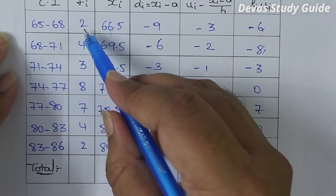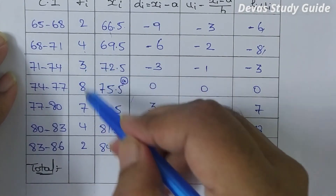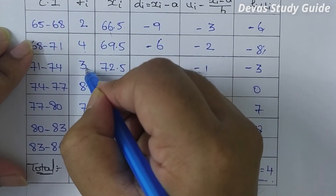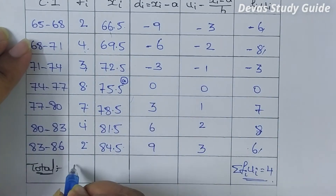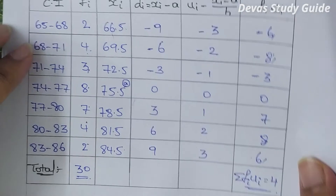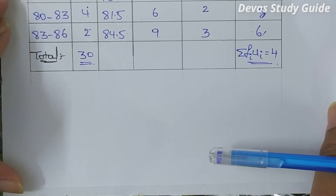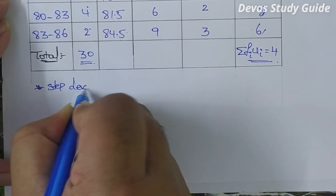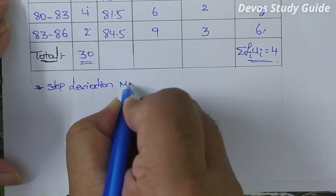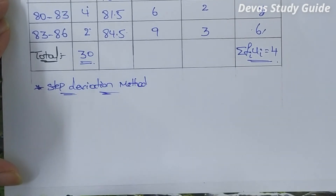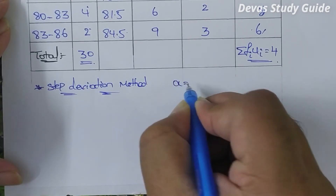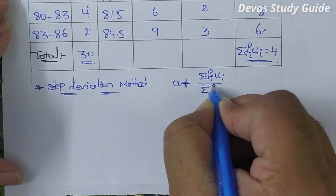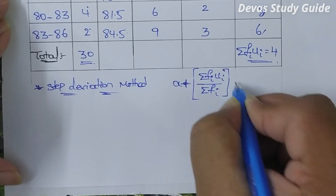Calculating sigma fi: 8 plus 2 is 10, 7 plus 3 is 10, total 20; 4 plus 4 is 8, 8 plus 2 is 10, total 30. So sigma fi is 30. The step deviation method formula is: Mean equals A plus sigma fi·ui divided by sigma fi, into h.